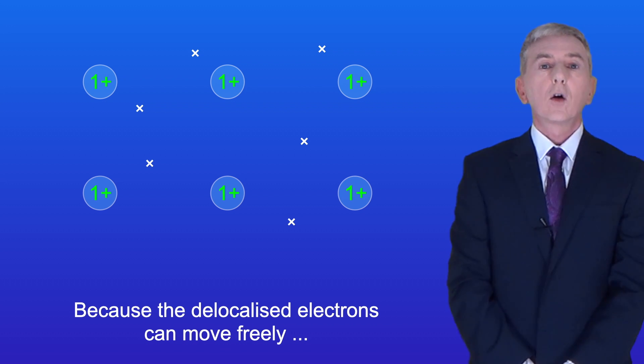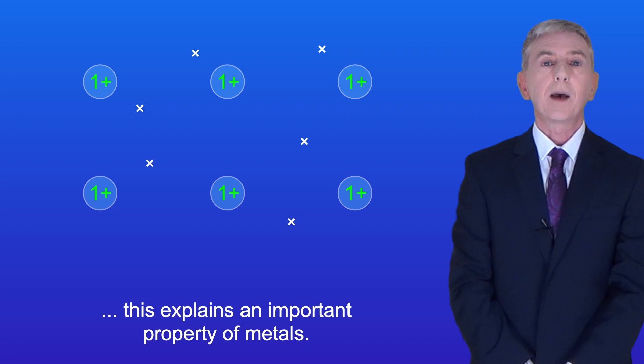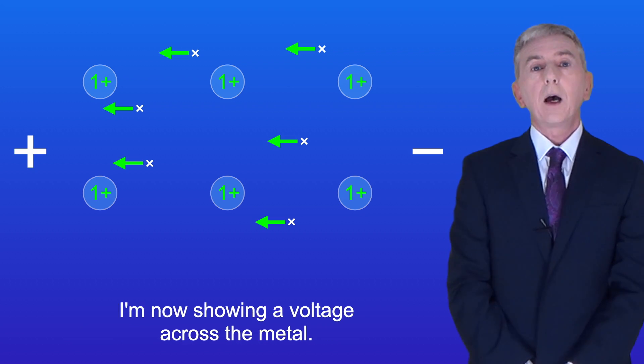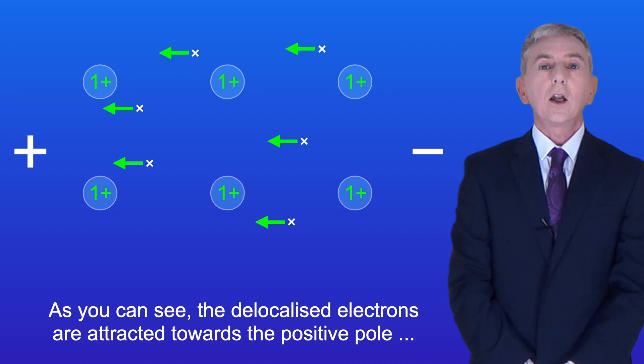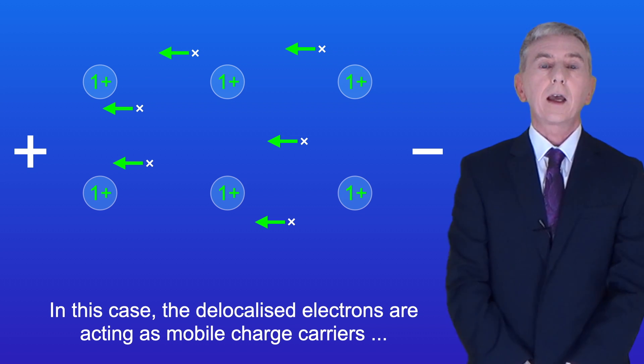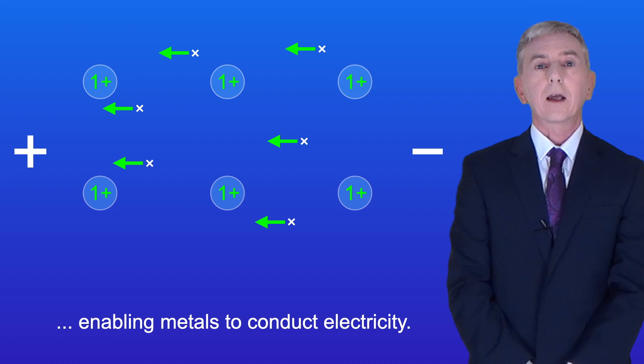Now because the delocalized electrons can move freely, this explains an important property of metals. Metals are good conductors of electricity when they're both solids or liquids. I'm now showing a voltage across the metal. As you can see the delocalized electrons are attracted towards the positive pole and move towards it. In this case the delocalized electrons are acting as mobile charge carriers enabling metals to conduct electricity.